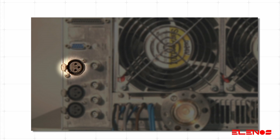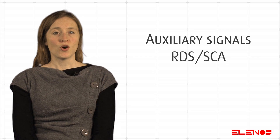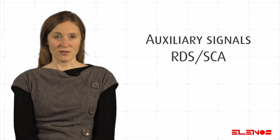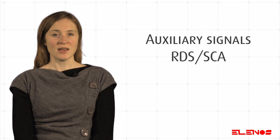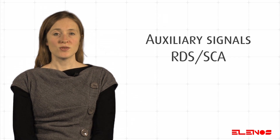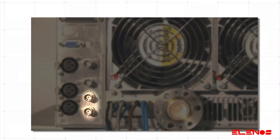You just need to apply the signal to the XLR connector on the rear panel and the signal is automatically recognised. Auxiliary signals, RDS, SCA: to use these signals, apply them to the relative BNC connector on the rear panel.